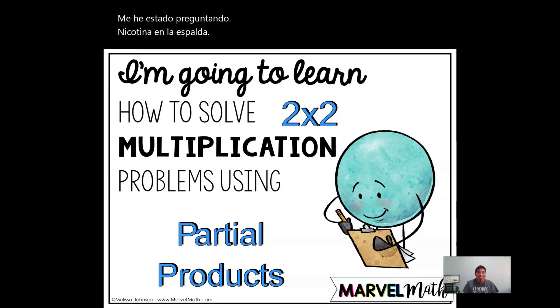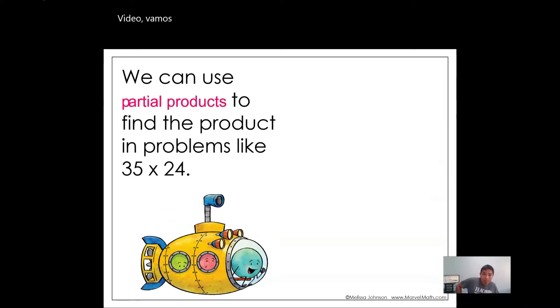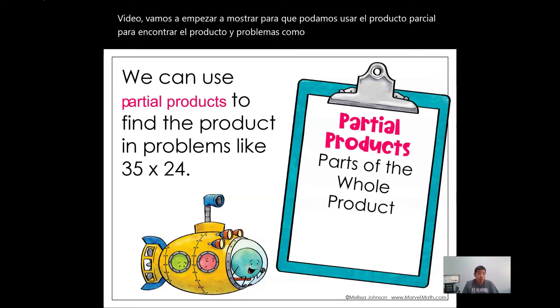Hello students, I hope you are having a wonderful day. Today we're going to be learning how to solve 2-digit times 2-digit multiplication using partial products. This is just another way to do this. Let's get started. We can use partial products to find the product in problems like 35 times 24. Partial products are parts of the whole product. That's why we have to add at the end to make the whole product.